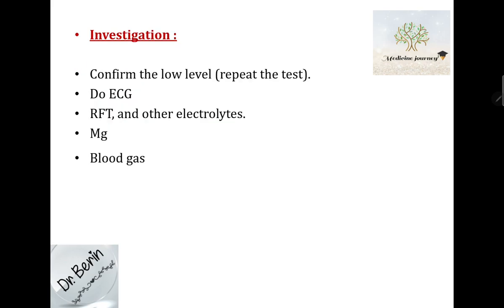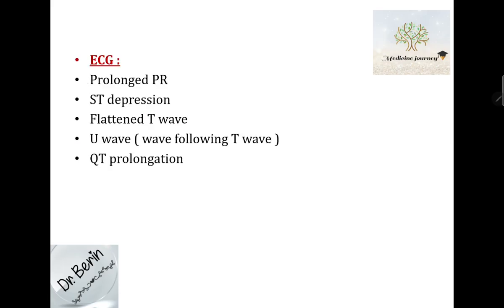For investigations: first, confirm the low level by repeating the test. Then do an ECG to check for any changes. Assess renal function and order other electrolytes, especially magnesium. In some cases we need a blood gas, like in alkalosis patients. ECG changes in hypokalemia include prolonged PR, ST depression, flattened T wave, U wave (a wave that follows the T wave), and QT prolongation.